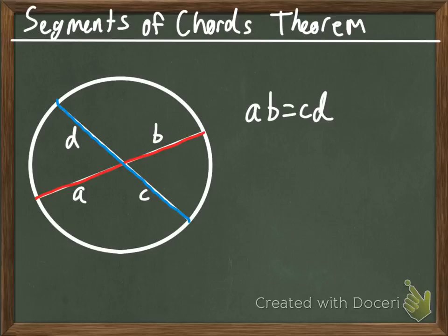So, if we take those two broken chords, multiply the pieces of one, it will equal the multiplied pieces of the other.